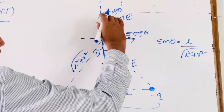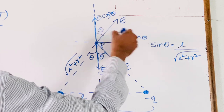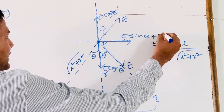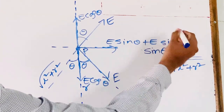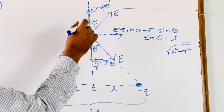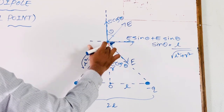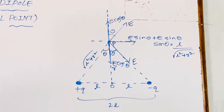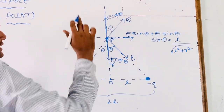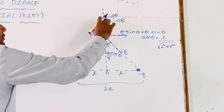Here we have written E cos θ, and we label the perpendicular component as E sin θ. Now, these two E cos θ components get cancelled. Why? Because both E cos θ components have the same magnitude but are directed in opposite directions at point P. Since they are vectors directed in opposite directions with the same magnitude, their vector addition becomes zero.